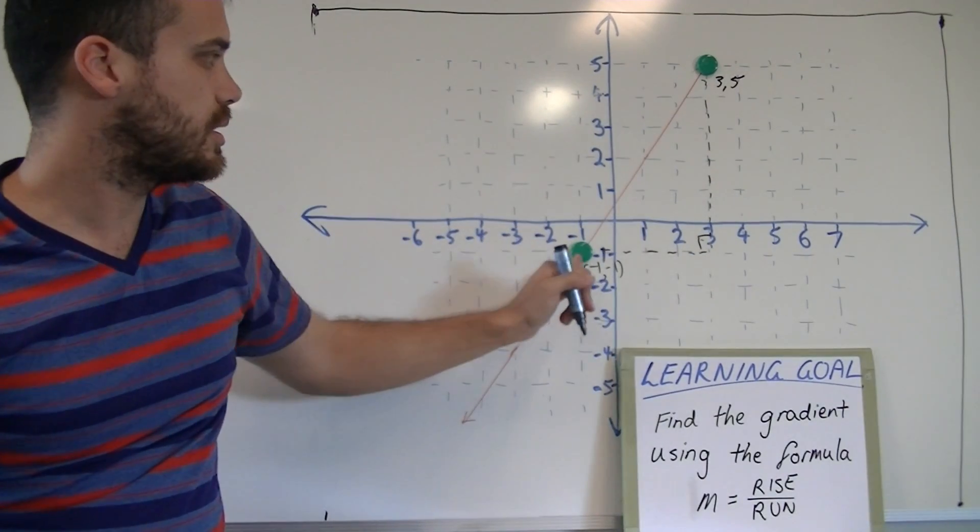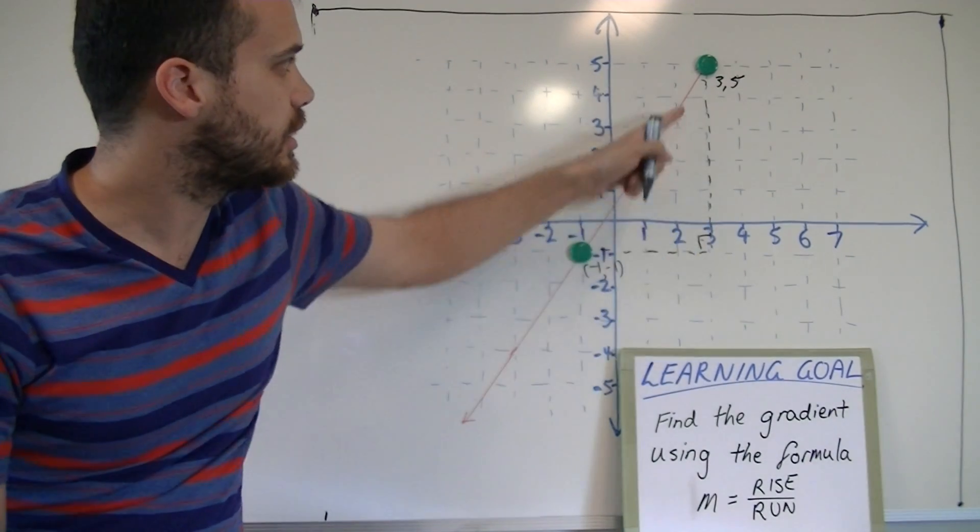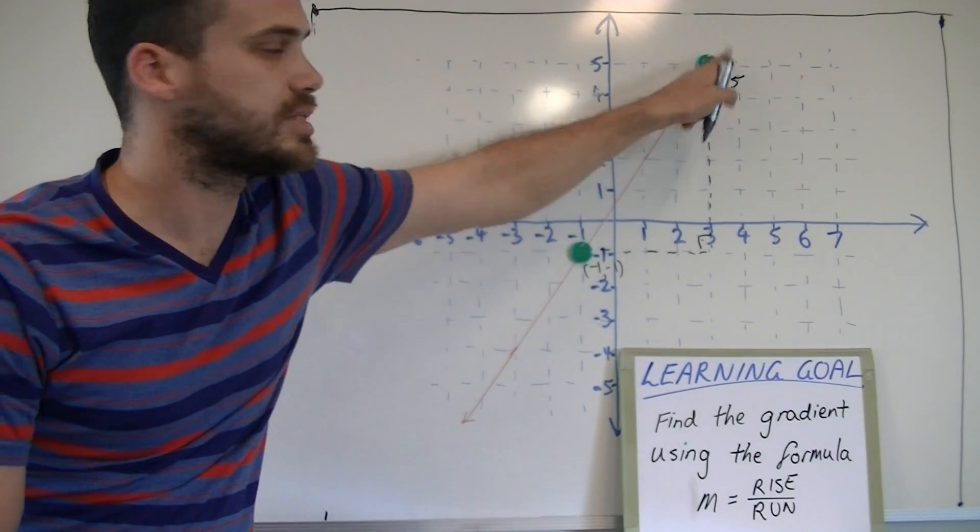And we can see that it goes 1, 2, 3, 4 across, and it goes 1, 2, 3, 4, 5, 6 up.